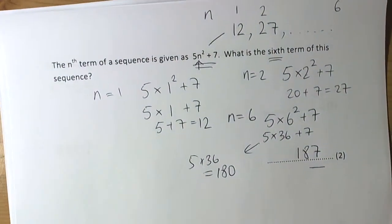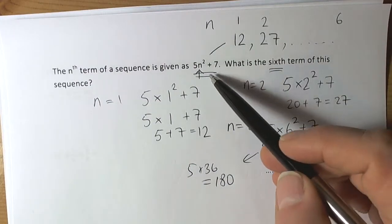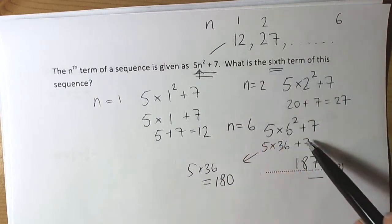So that's a quick summary of how we can substitute numbers into sequence rules to find out the value of any term.